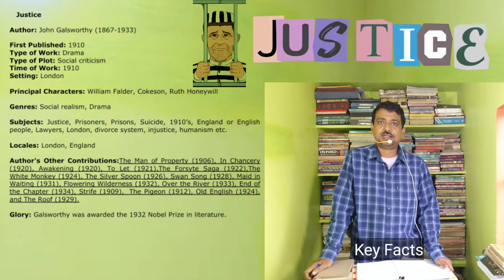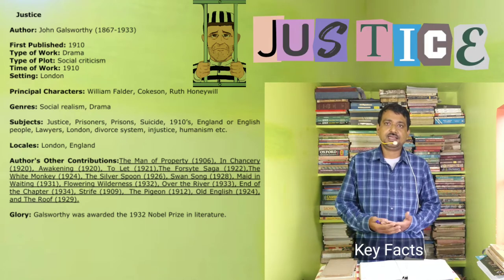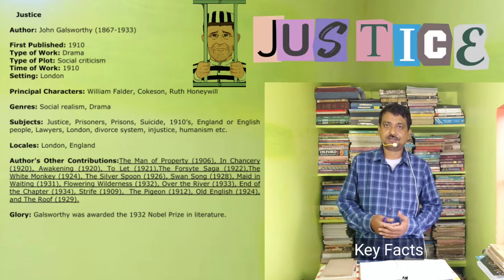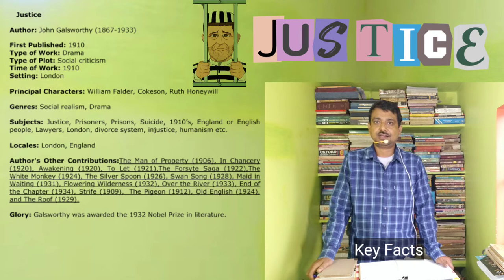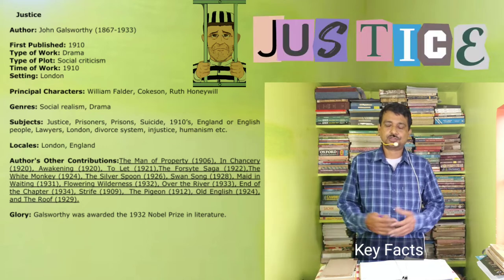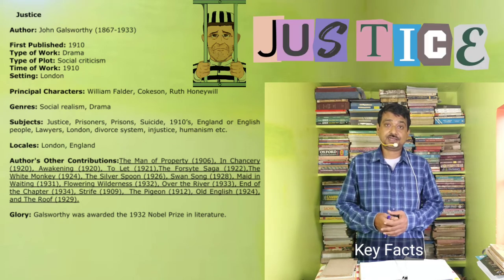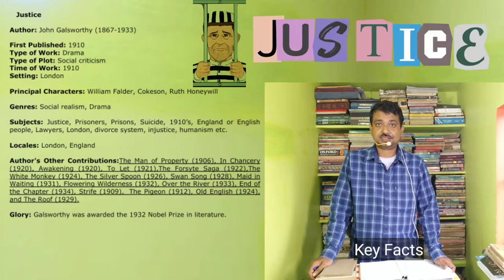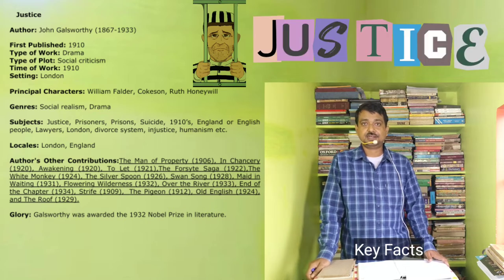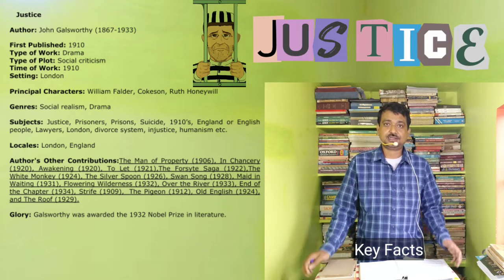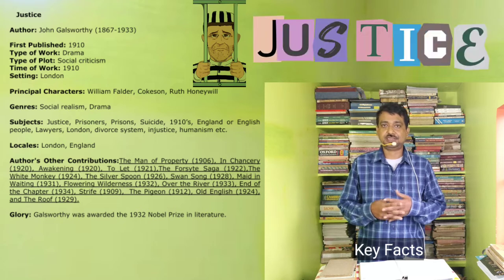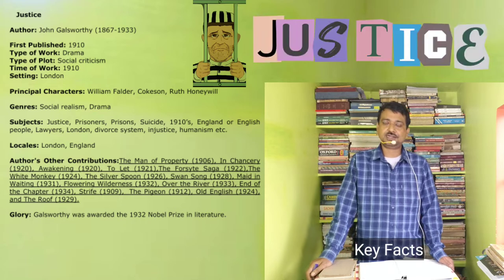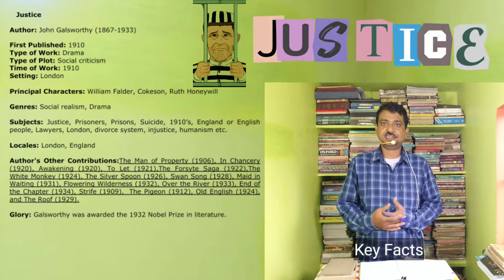John Galsworthy's other notable contributions include 'The Man of Property', 'In Chancery', 'Awakening', 'To Let', 'The Forsyte Saga', 'The White Monkey', 'The Silver Spoon', 'Swan Song', 'Over the River', 'End of the Chapter', 'Strife', 'The Pigeon', 'Old English', and 'The Roof'. John Galsworthy was awarded the 1932 Nobel Prize in Literature.